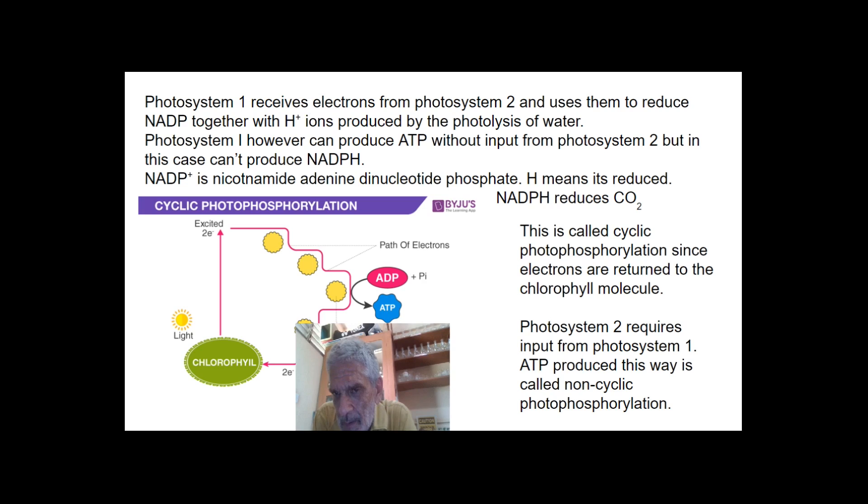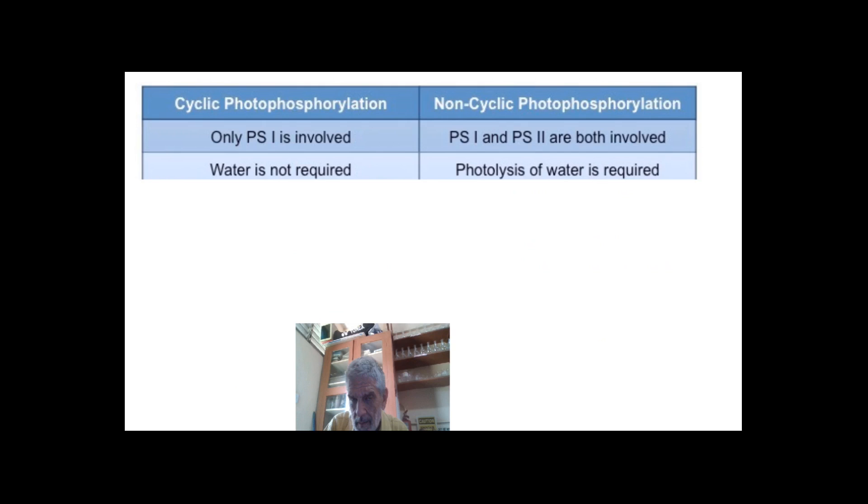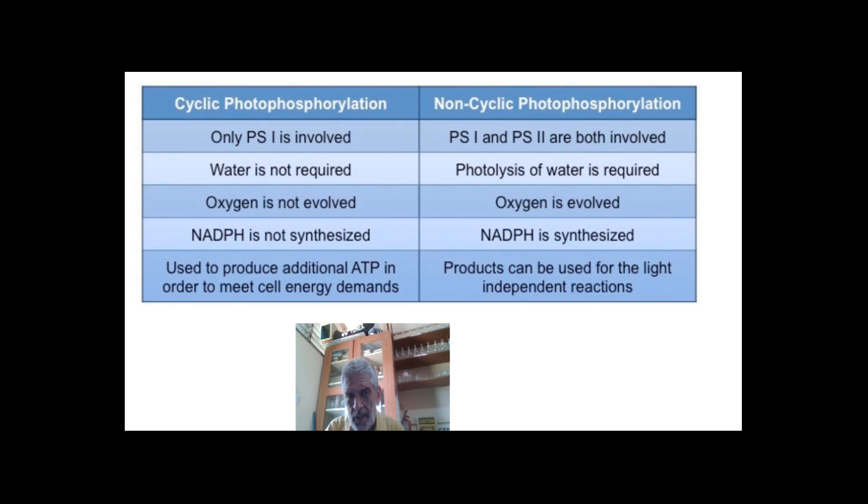Photosystem one, the process by which ATP is produced is called cyclic photophosphorylation. It's photophosphorylation because phosphate is being added to ADP. It's cyclic because it just goes round in a cycle. Because there's no loss of electrons. Photosystem two requires input from photosystem one. And ATP produced this way is called non-cyclic photophosphorylation. There are two types of photophosphorylation: cyclic and non-cyclic. Cyclic: only photosystem one is involved. Non-cyclic: both of them are involved.